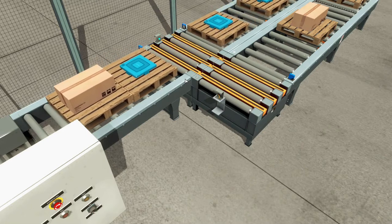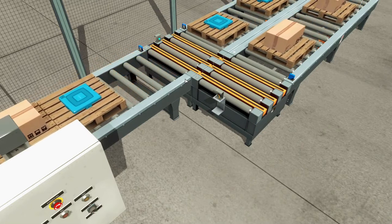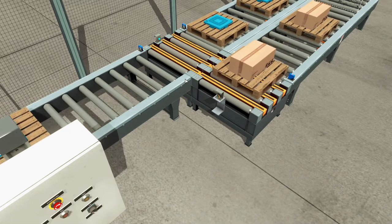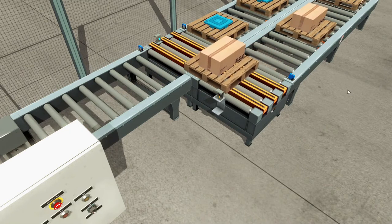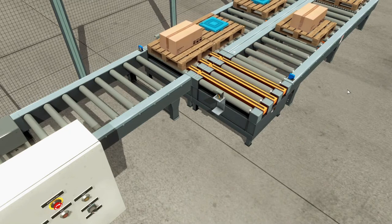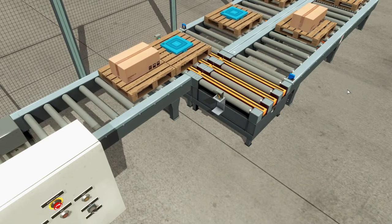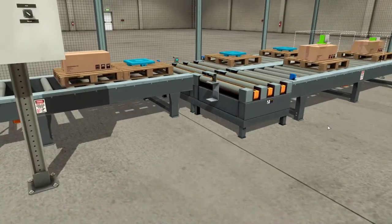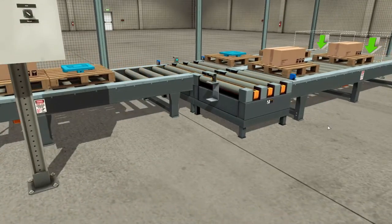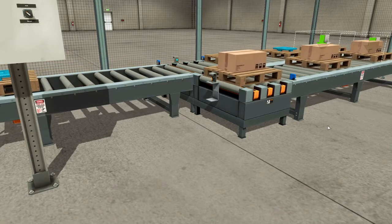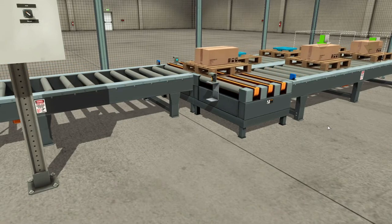When the final product reaches the diffuse sensor, conveyor 1 will stop. The box from conveyor 2 will go through the chain transfer and move on the left side. When the capacitive sensor senses the box, conveyor 1 will run. Together, the box and the final product will go through the exit conveyor.